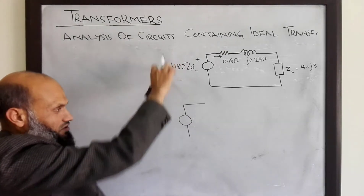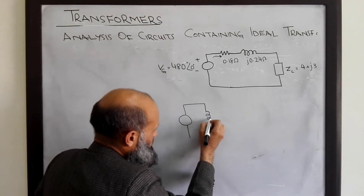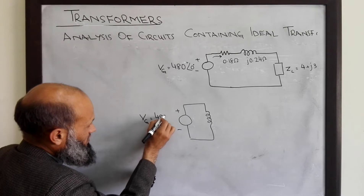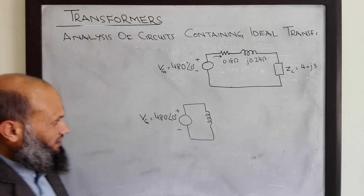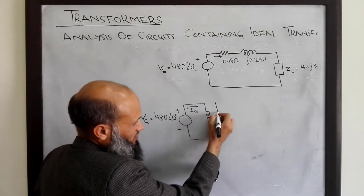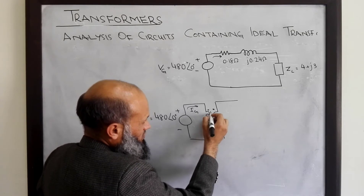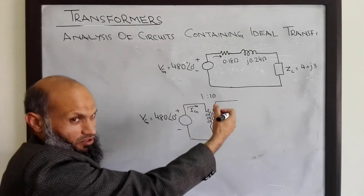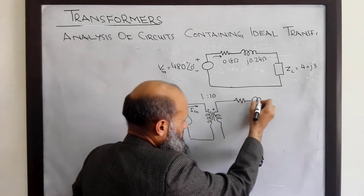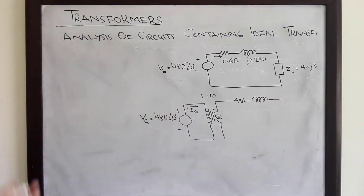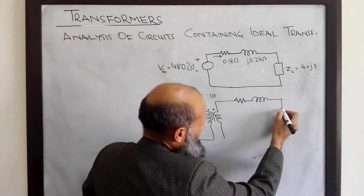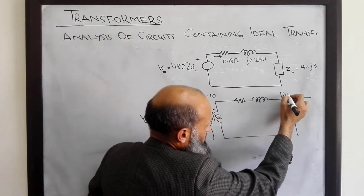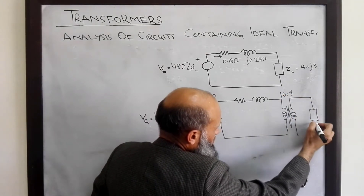The second circuit uses the same generator with VG equal to 480∠0° V, but before transmitting the voltage, it is stepped up using a step-up transformer with a turns ratio of 1:10 — the generated voltage is stepped up by 10 times and then transmitted. Before final use, it is stepped down again using a step-down transformer with a turns ratio of 10:1, and the same load is connected at the output. We would again like to determine losses in the transmission line.